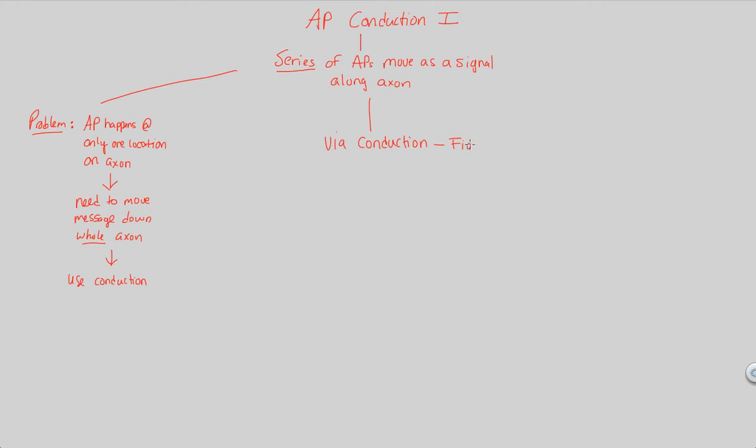And conduction is shown very nicely on figure 48.12. So what we're going to do via conduction is the following. We have to understand how it starts and how it continues. What we want to do is propagate an action potential down an axon. We want the action potential, the message, as a result of shifts in membrane potential, significant shifts in membrane potential, to move down the whole axon.